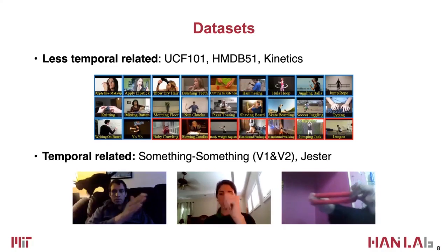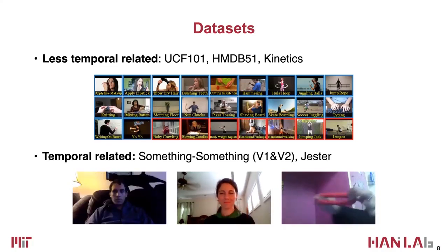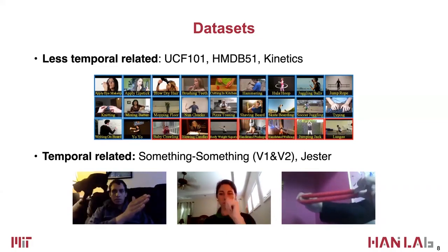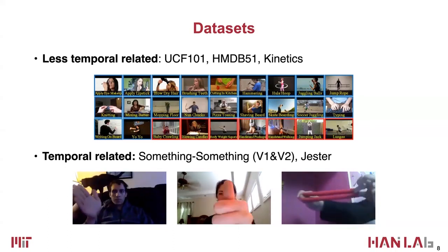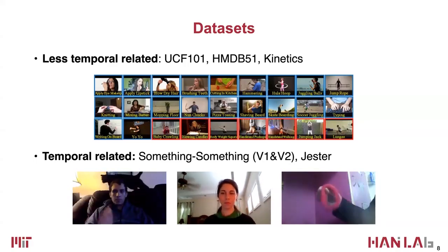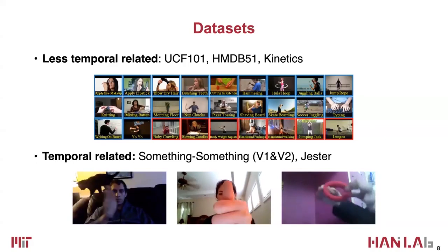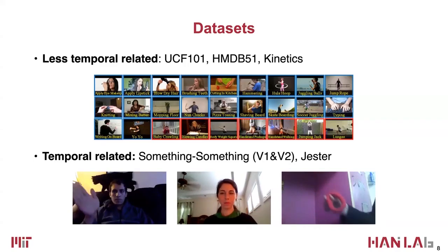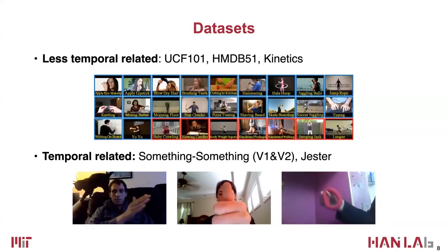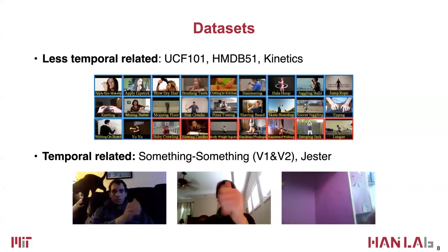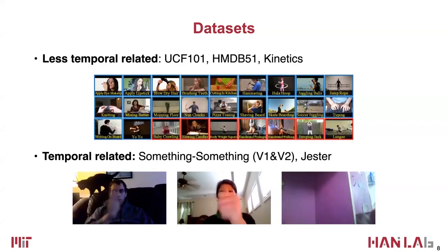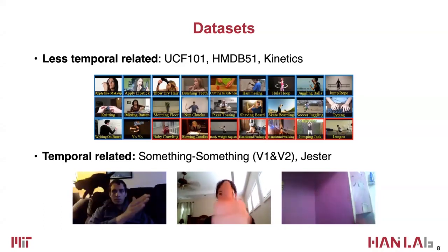On the other hand, there are temporally-related datasets like Something-Something and Jester. For Something-Something, labels like 'stretching a ring' or 'move something from left to right' require consideration of temporal order to give a reasonable prediction. The Jester dataset is a hand gesture recognition dataset — recognizing gestures like swipe, zoom in, zoom out requires temporal information.